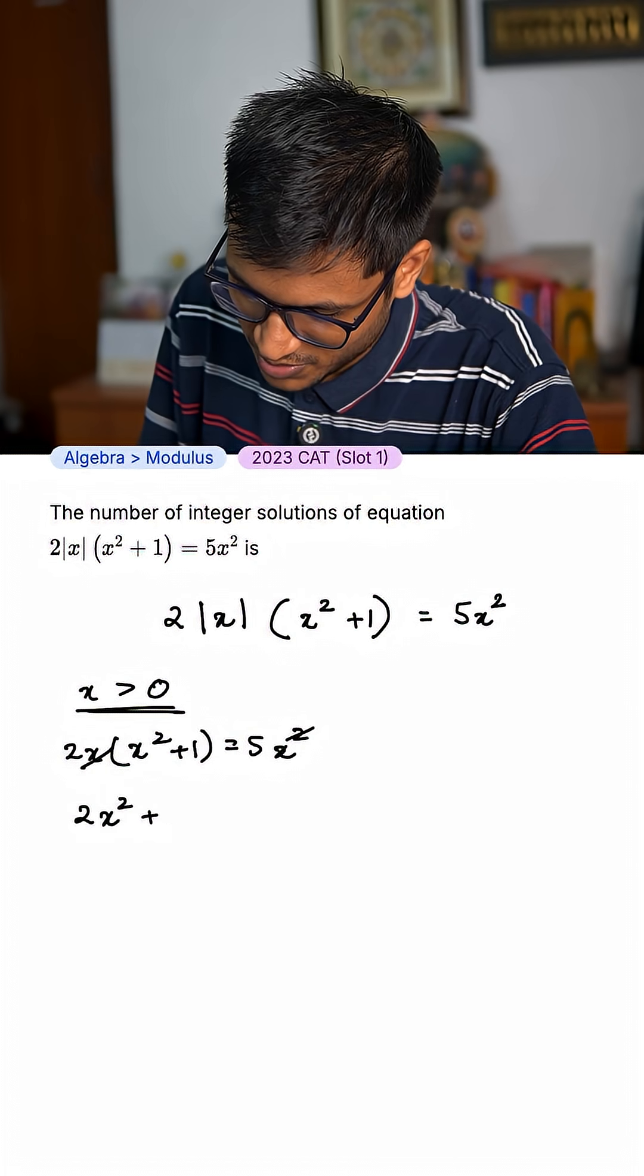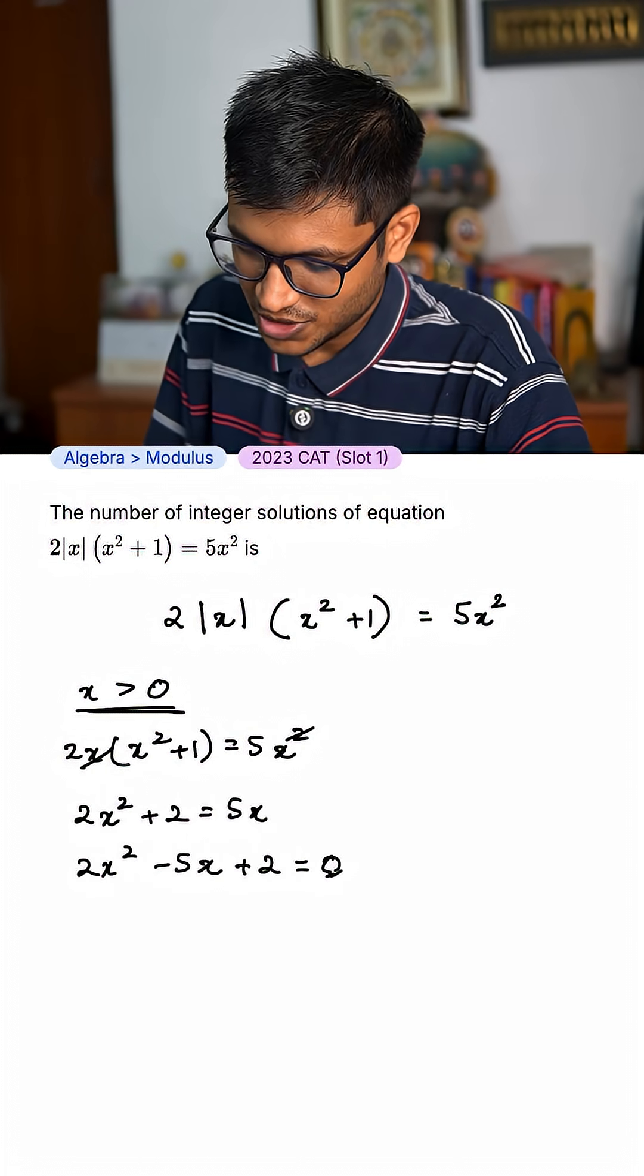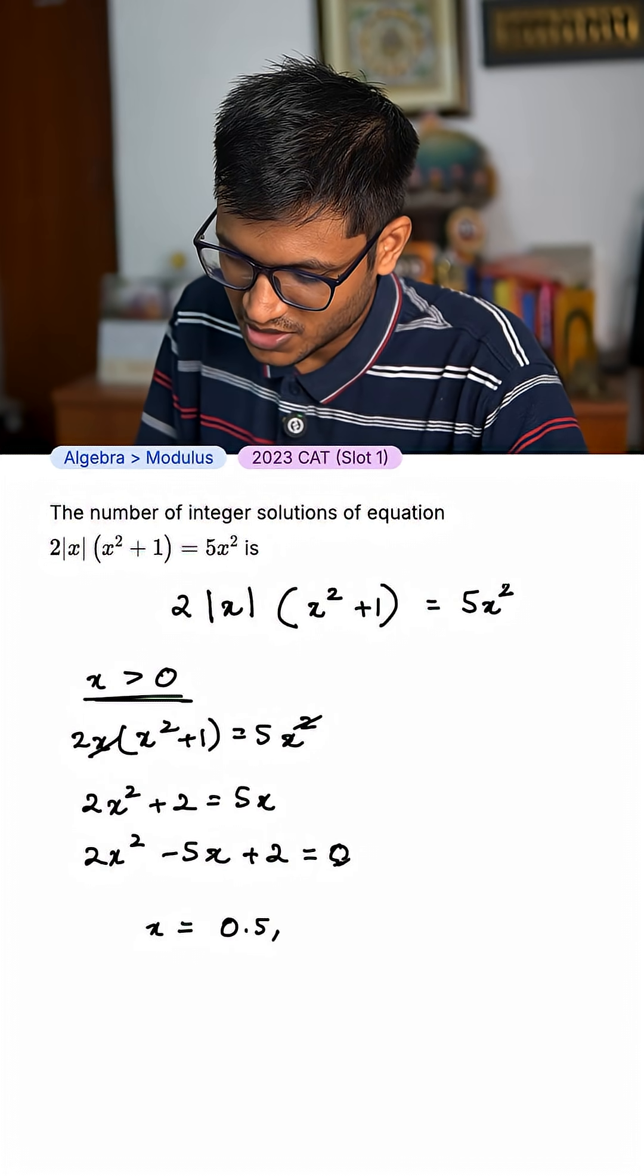So, 2x square plus 2 equal to 5x. This is a quadratic equation, and when you solve it, you will get x equal to 0.5 and x equal to 2.